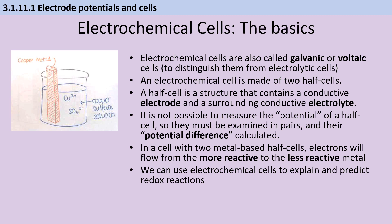Electrochemical cells, also known as galvanic or voltaic cells, are made of two half-cells. A half-cell is a structure that contains a conductive electrode and a surrounding conductive electrolyte. It isn't possible to measure the potential of a half-cell, so half-cells need to be examined in pairs and their potential difference calculated. In a cell with two metal-based half-cells, electrons will flow from the more reactive metal to the less reactive metal, and we can use electrochemical cells to explain and predict redox reactions.